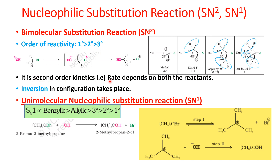SN2 follows second-order kinetics — both the reactant (alkyl halide) and the nucleophile determine the rate. The stereochemical result is inversion of configuration. For example, if chlorine is on one side, the nucleophile attacks from the opposite side, resulting in inversion — like an umbrella flipping.